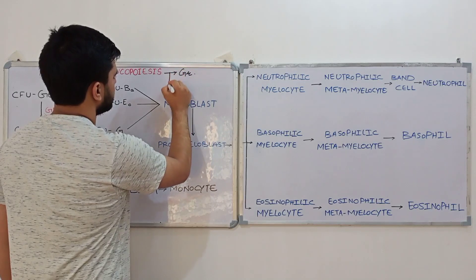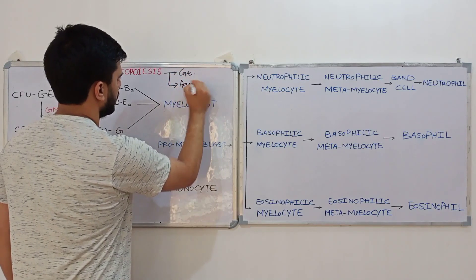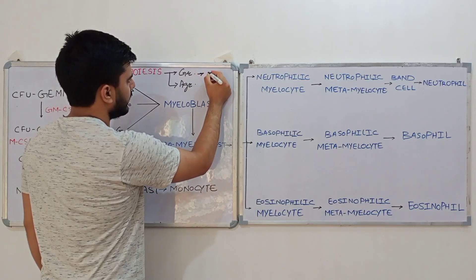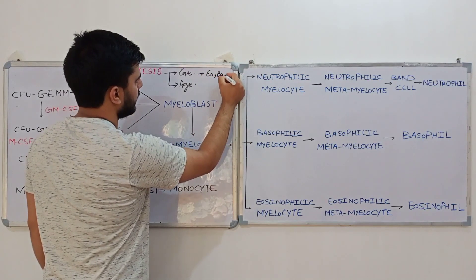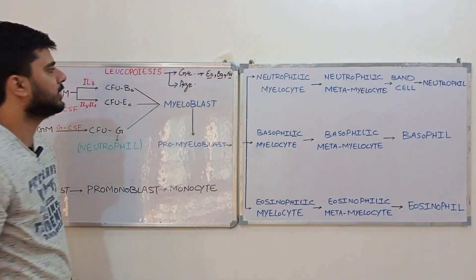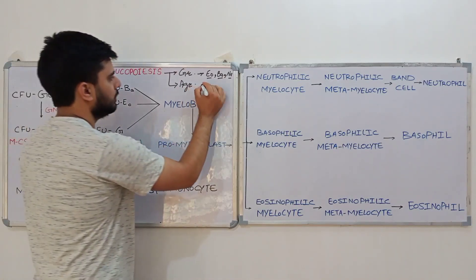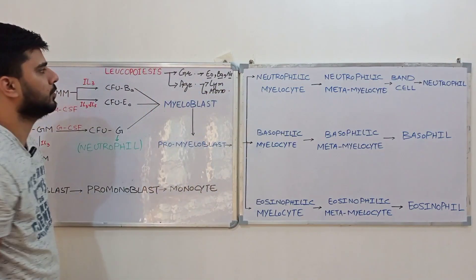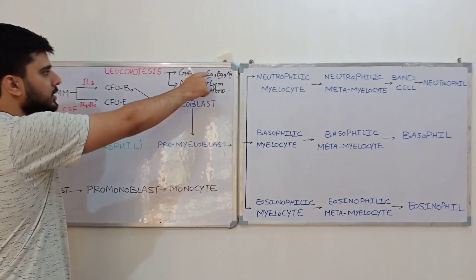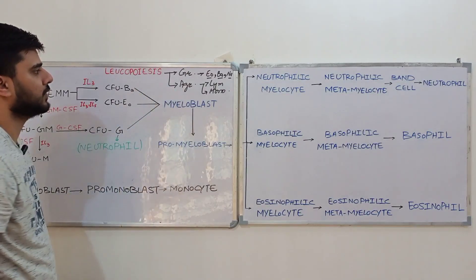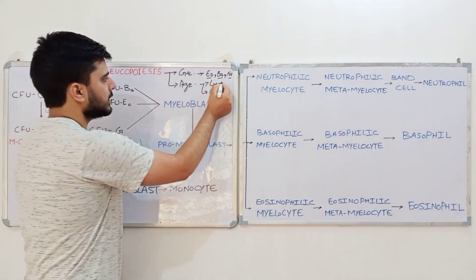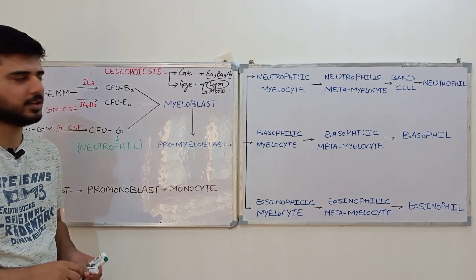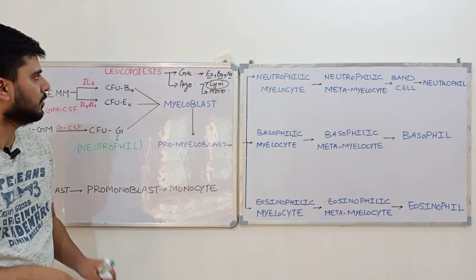Granulocytes include eosinophils, basophils, and neutrophils — three types. Agranulocytes include lymphocytes and monocytes. In today's lecture, we will not discuss the formation of lymphocytes, because that will be easier to correlate in the lymphatic system section. Instead, we will focus on the formation of granulocytes and monocytes.